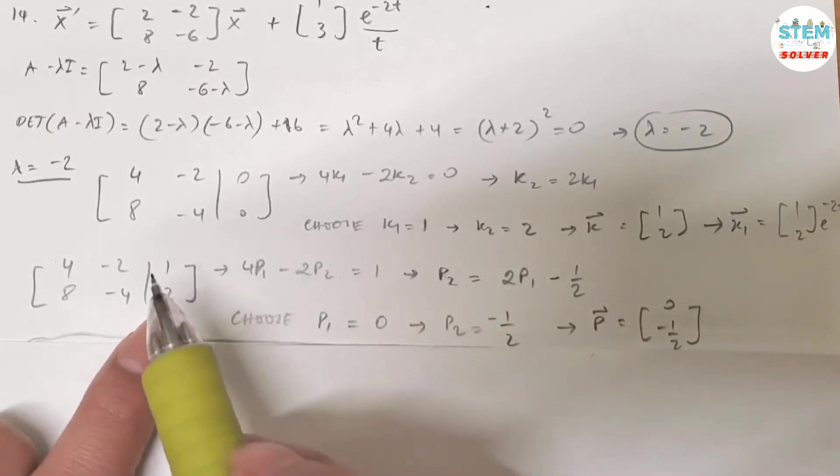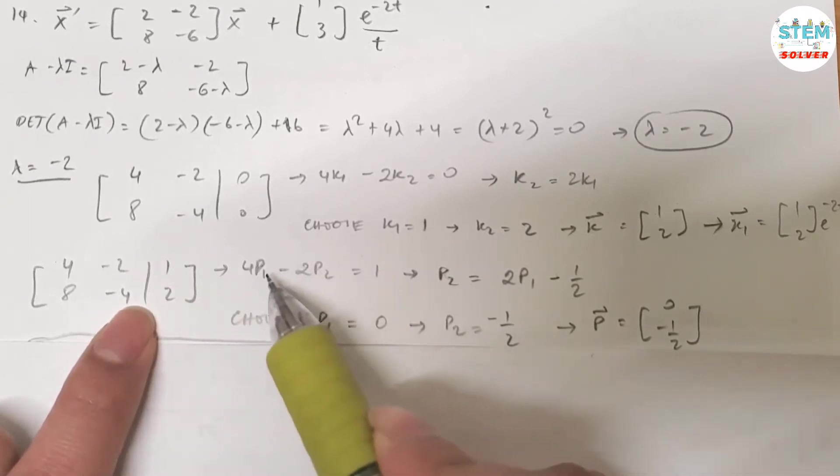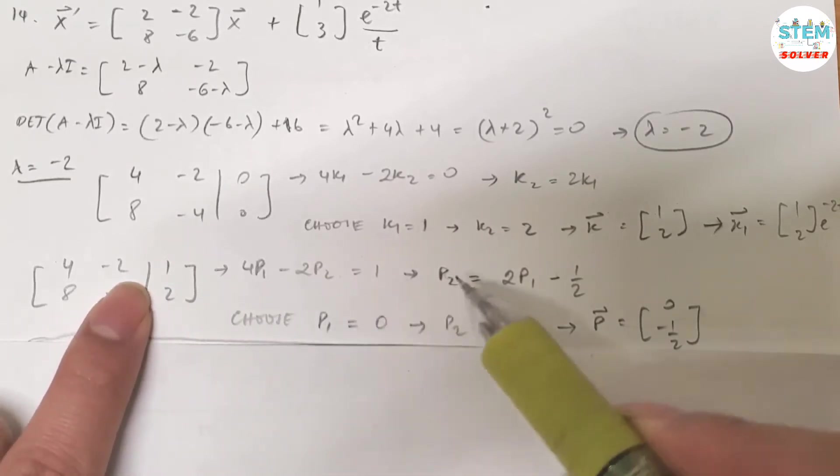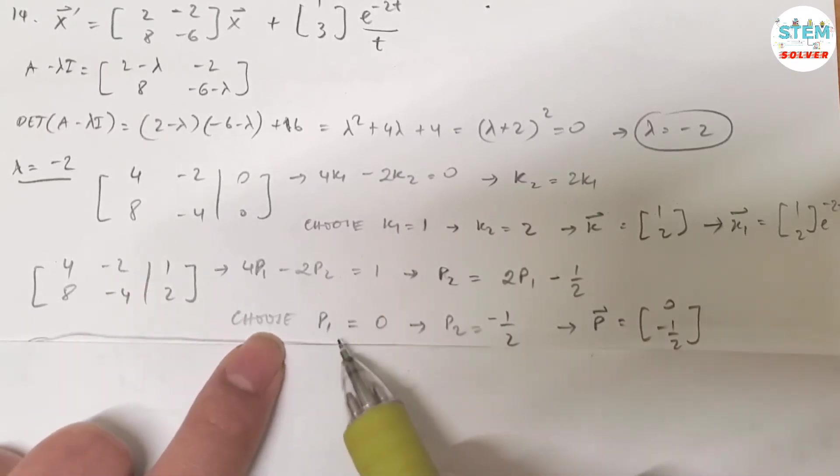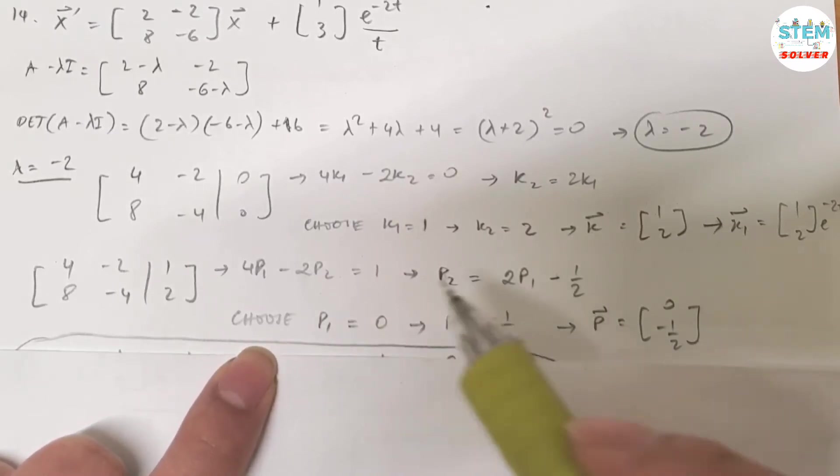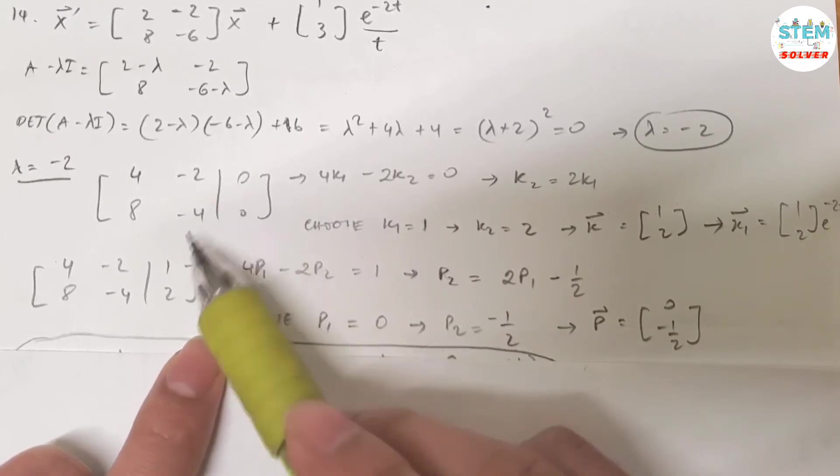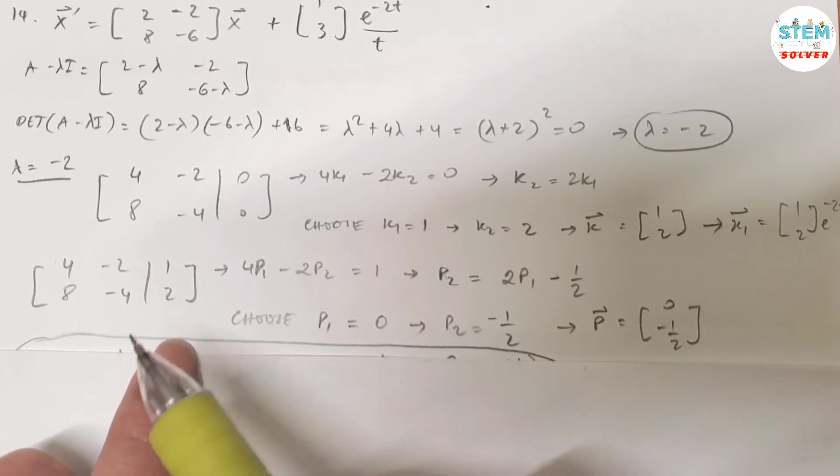So if I do that, I will get this matrix. Again, from the first equation, I know that 4p1 minus 2p2 equals 1. So for p2, I got 2p1 minus 1 half. If I choose p1 = 0, then p2 is negative 1 half. Then my vector p is [0, -1/2]. Because these two matrices are different, for this one I use k1, k2. For this one I use different variables, which is p1, p2.